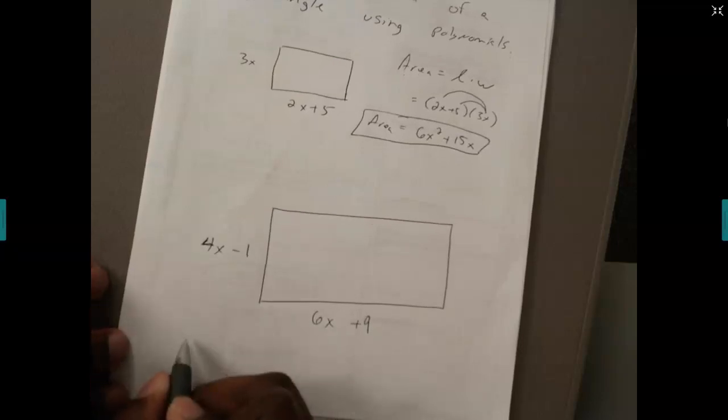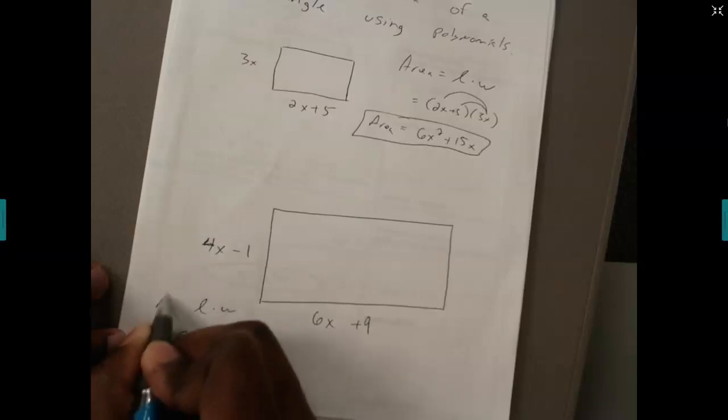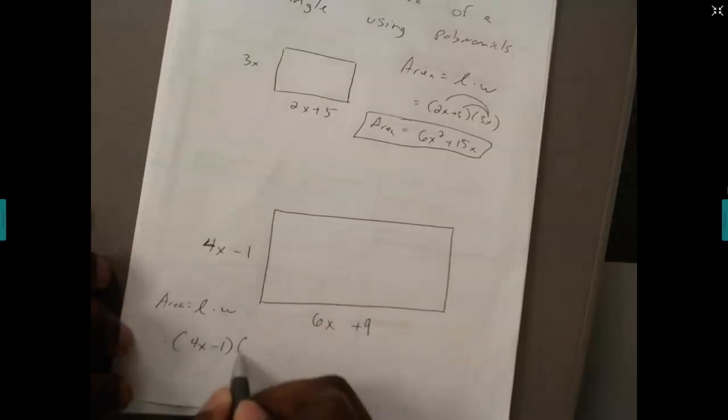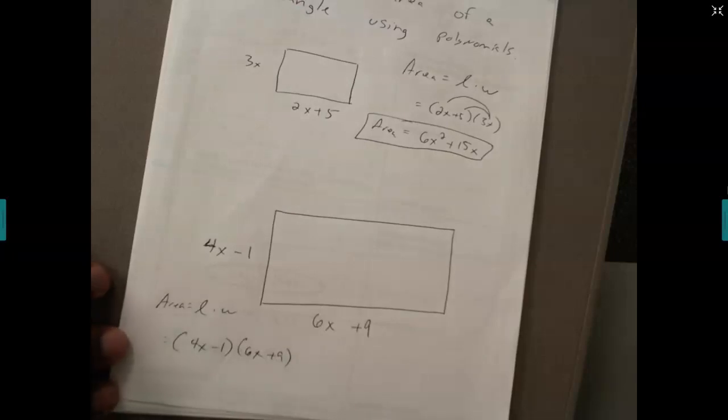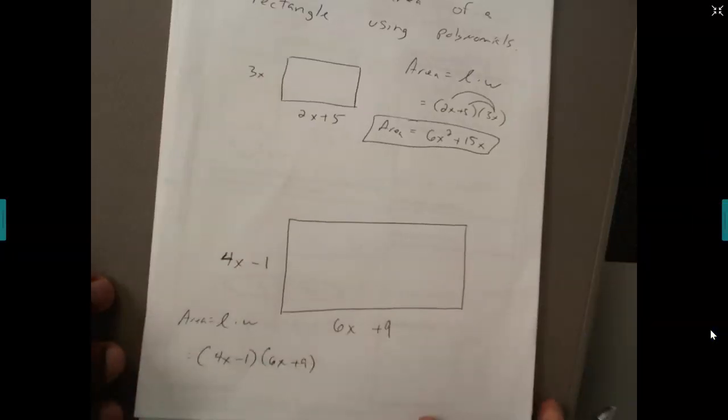Length times width is the area, so it should be 4x take away 1 and my width is 6x plus 9. It doesn't really matter which one you call length and width, you can choose either one.